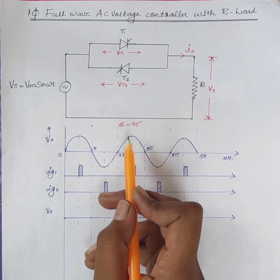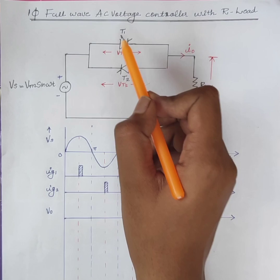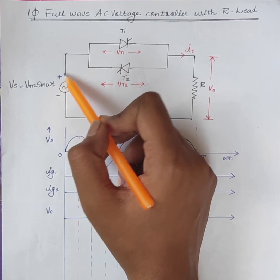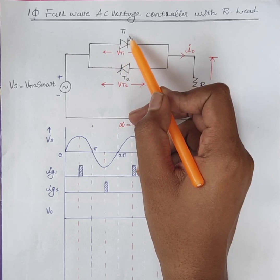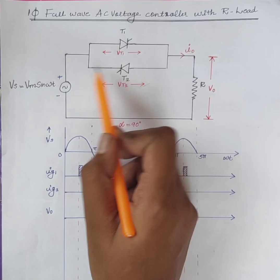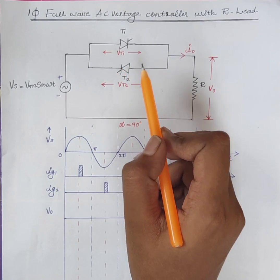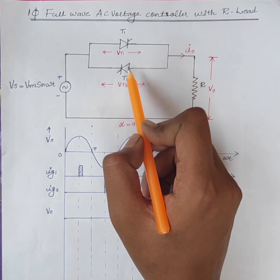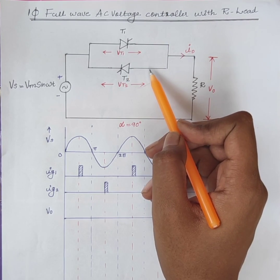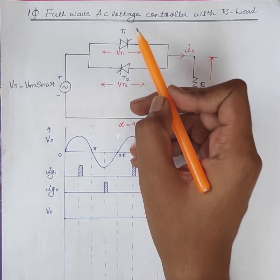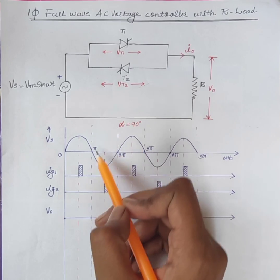During the positive half cycle, the anode of thyristor T1 is connected to positive and cathode is connected to negative, so thyristor T1 is forward biased. In case of T2, cathode is connected to positive and anode is connected to negative. Therefore, thyristor T2 is reverse biased. We can conclude that during the positive half cycle, T1 is always forward biased and T2 is reverse biased. Therefore, firing pulses are given to thyristor T1 during the positive half cycles.